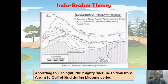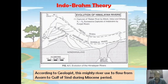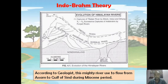Now I will discuss in detail about the Indo-Brahma theory — the theory that describes the origin of the three major river systems of North India, or the three major Himalayan river systems. In this diagram, you will find that the flow direction of the Siwalik river, or Indo-Brahma river, is shown. This river flowed from Assam to the Gulf of Sindh during the Miocene period. It is called the Siwalik river because geologists believed that the Siwalik range of the Himalayan mountain system was formed due to deposition of sediment brought down by the Indo-Brahma river, and so we also call it the Siwalik river.